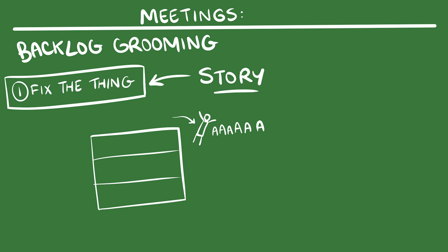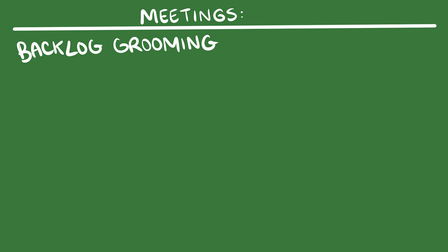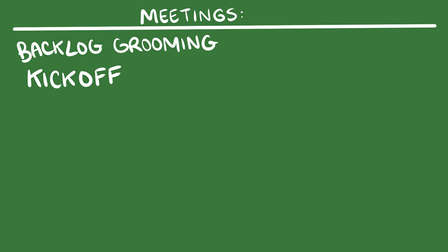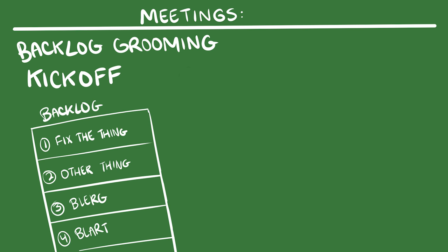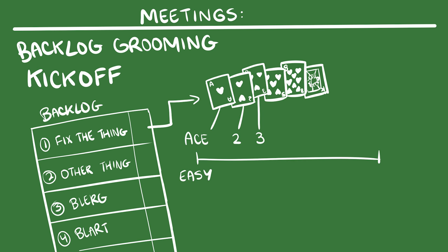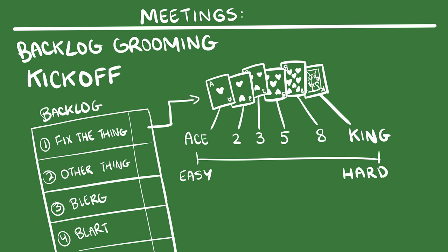The backlog grooming happens before the sprint starts, to prepare everybody for the kickoff. During the kickoff meeting, the product owner is kicked very hard. Then the team cracks open the backlog in approximate order of priority, and uses planning poker to estimate the difficulty of each task. In planning poker, after hearing the description of each task and asking any clarifying questions, the team all assign the task a difficulty of ace, two, three, five, eight, or king. This also provides the scrum master with a hearty supply of useless 4, 6, 7, 9, 10, jack, and queen cards that he can use to erect impressive if delicate structures.